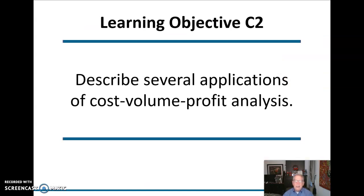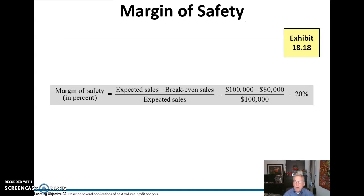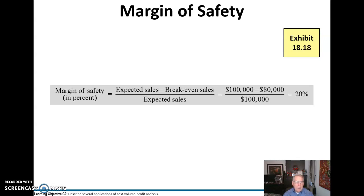Now we can look at several applications of cost-volume-profit analysis. Here we have the margin of safety: we take expected sales minus the break-even point sales and divide that by expected sales, which gives us 20%. That means I can be wrong on my expected sales by as much as $80,000 and still at least break even.